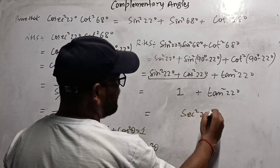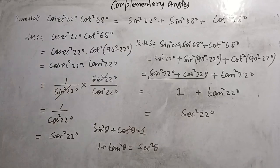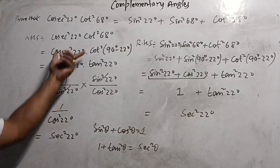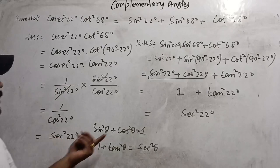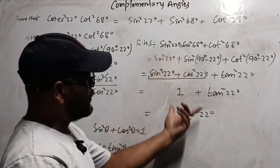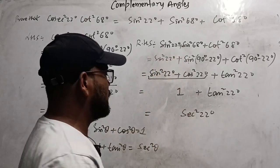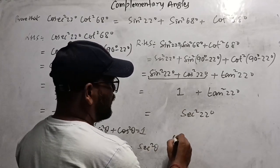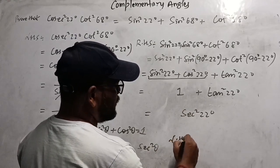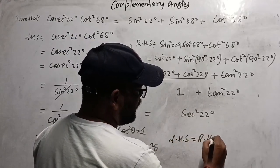Now using the formula 1 + tan²θ = sec²θ, you get sec²22°. So from LHS we got sec²22° and from RHS we also got sec²22°. Hence LHS = RHS, and the identity is proved.